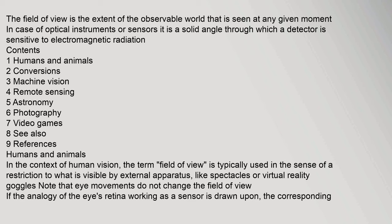Contents: 1. Humans and animals, 2. Conversions, 3. Machine vision, 4. Remote sensing, 5. Astronomy, 6. Photography, 7. Video games, 8. See also, 9. References. In the context of human vision, the term field of view is typically used in the sense of a restriction to what is visible by external apparatus like spectacles or virtual reality goggles.